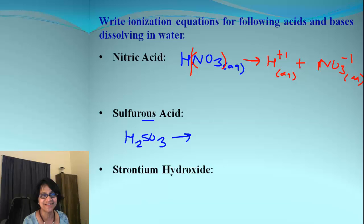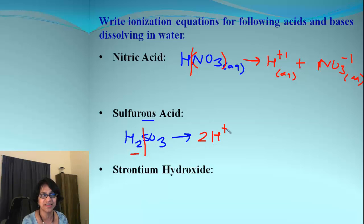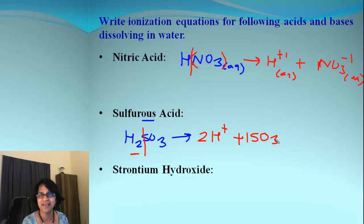Let's look at sulfurous acid, H2SO3. When that dissociates we get hydrogen and sulfate in a splitting pattern. There are two hydrogen ions, so we get 2 H+ each with charge +1, and one sulfate ion with charge −2.